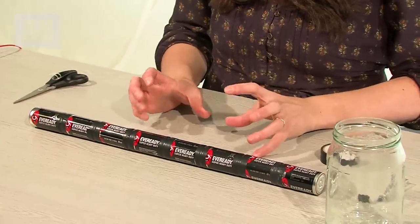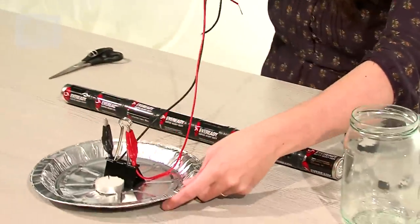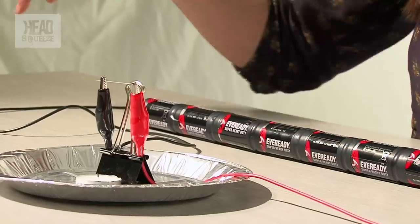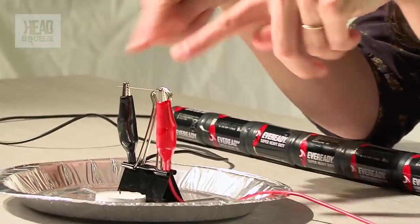So that's going to provide the electricity that will then go through into our pencil lead filament. So I think we're just about ready to go. We've got our supersized battery. We've got our wires that then go up to our pencil lead.